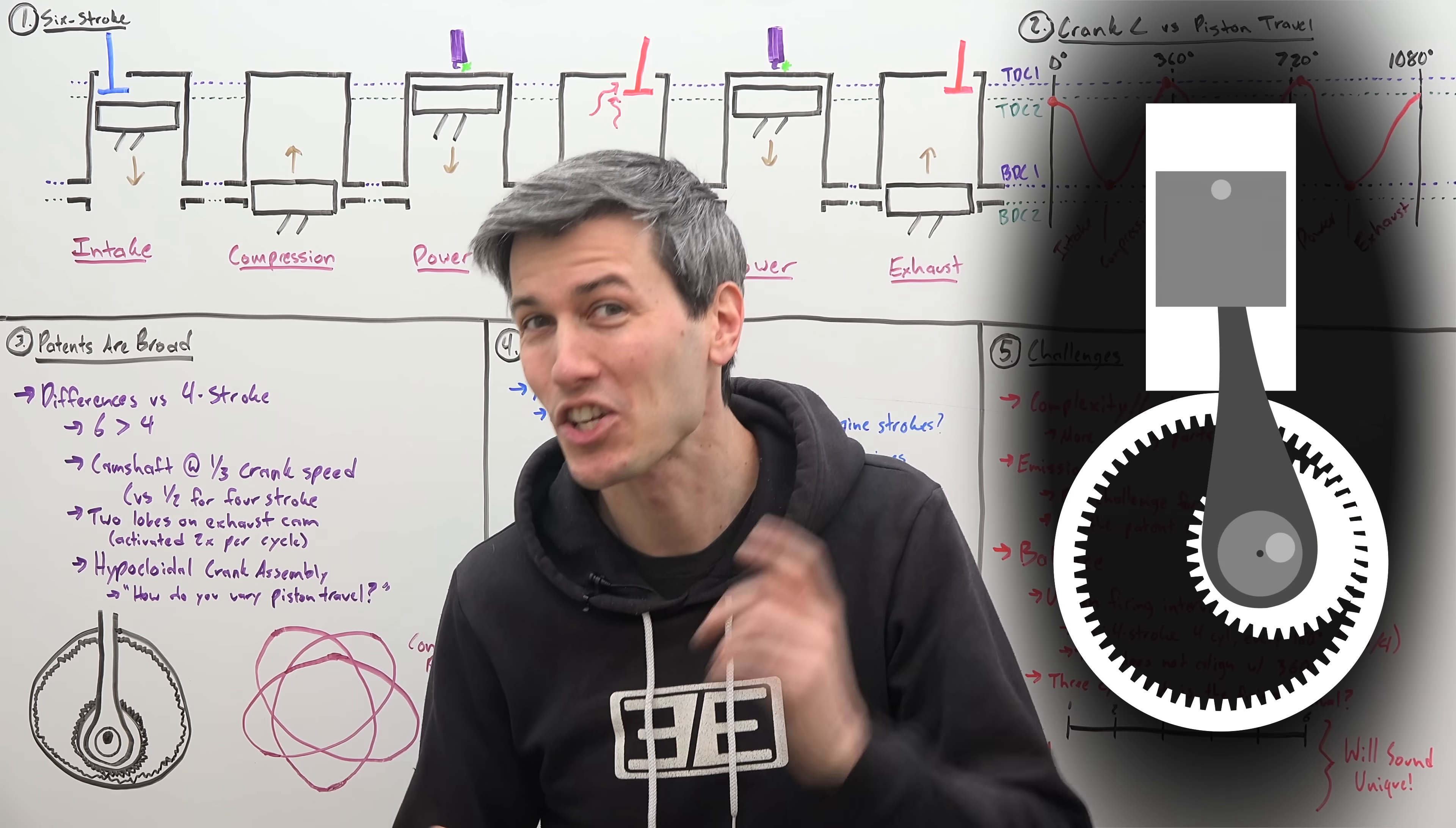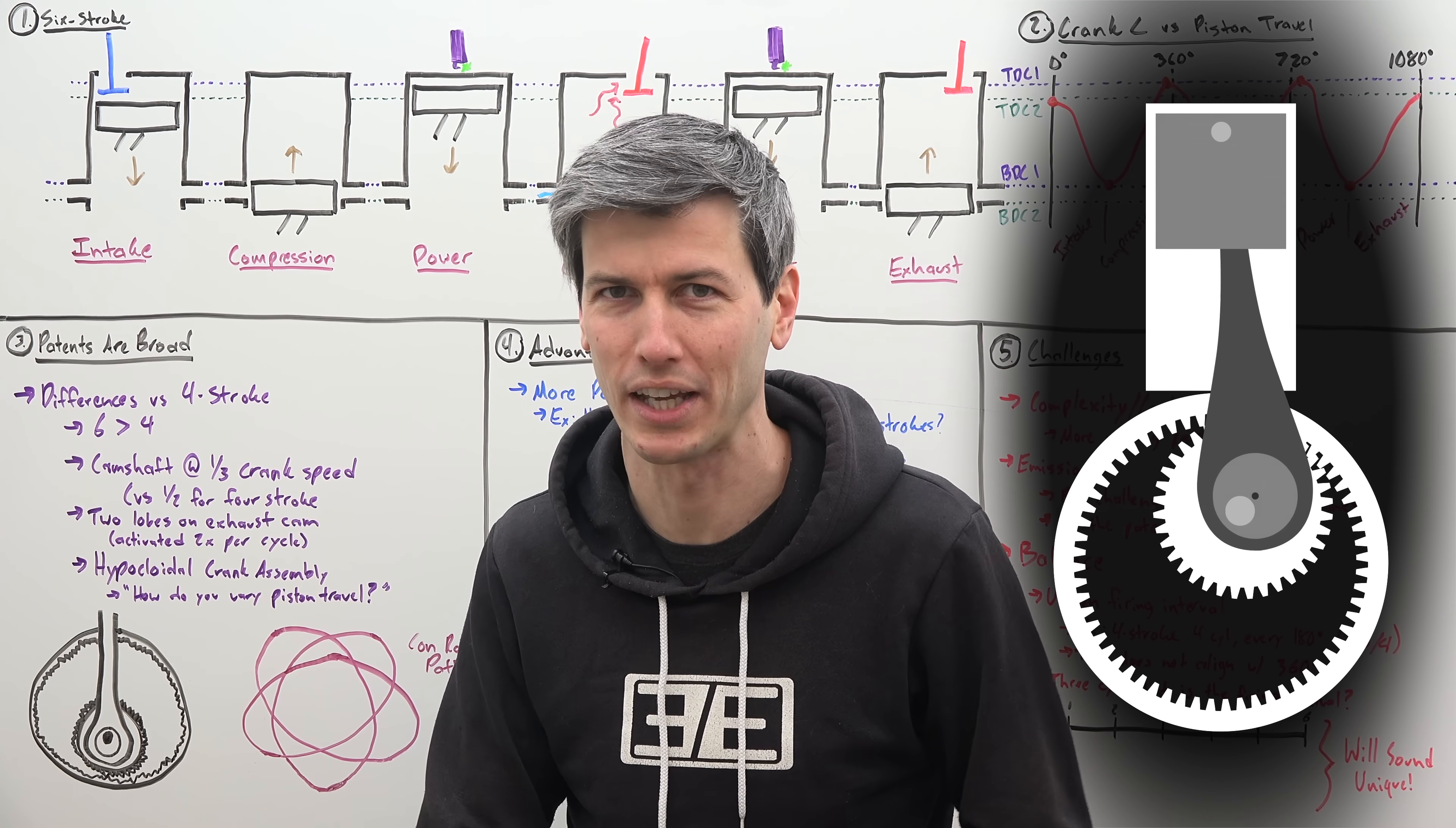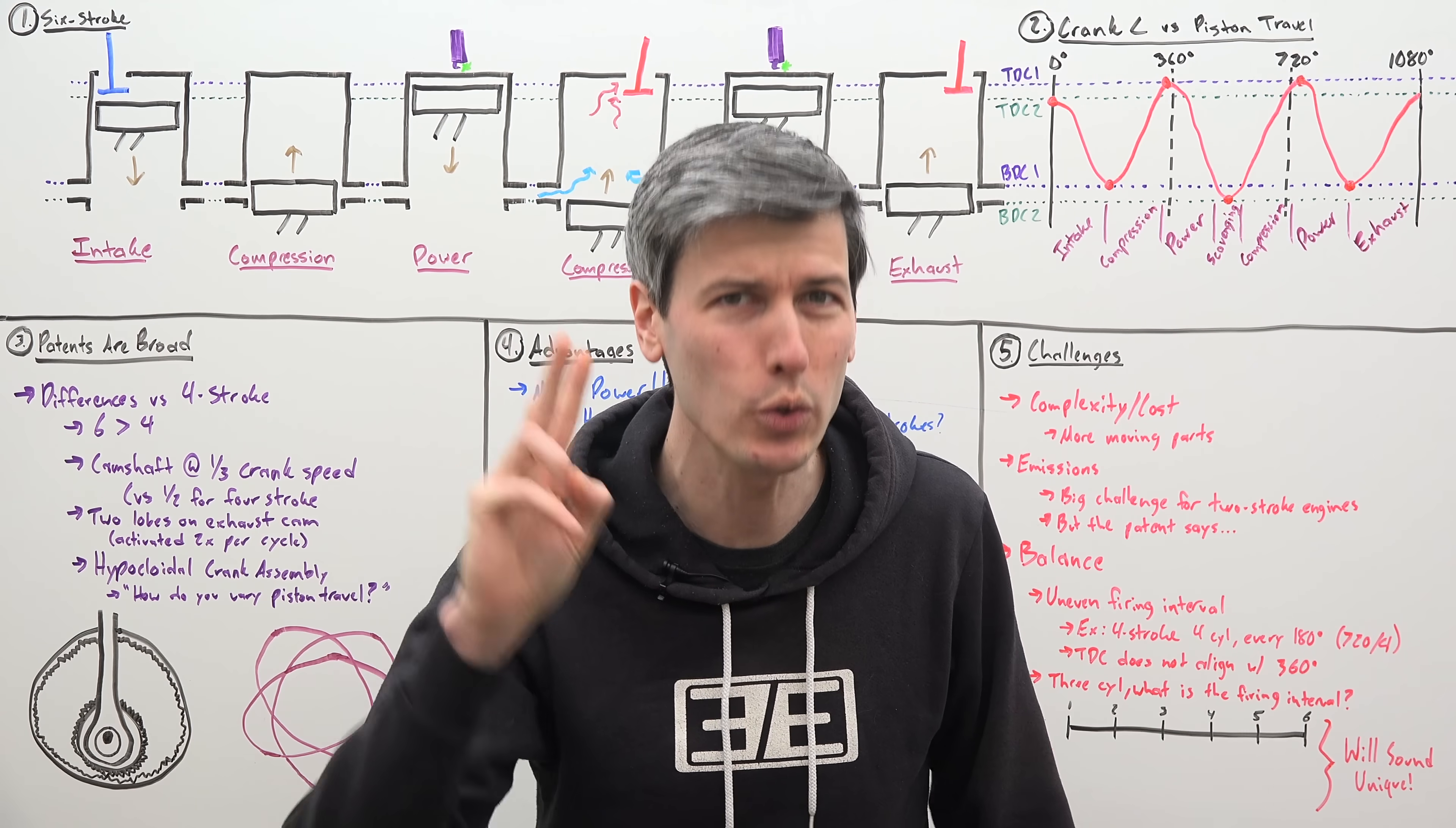Porsche has patented a six-stroke engine. For my viewers that are proficient at math, you'll realize that's two extra strokes versus a typical four-stroke engine. And what's exciting is that one of those extra strokes is a power stroke. So we now have two power strokes. How does it work?